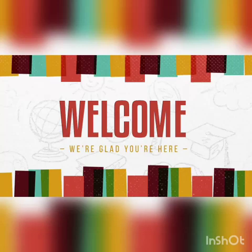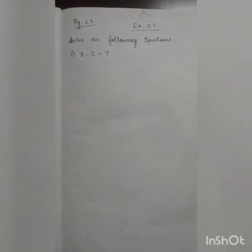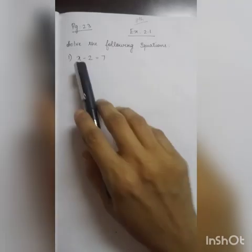Hi children, welcome to this session. Today we are going to start with the new exercise of chapter 2, which is Exercise 2.1. You can take page number 23 for your reference in your NCRT textbook. Now we are going to start with Exercise 2.1. You can see the question in your textbook. The question given is: solve the following equations.